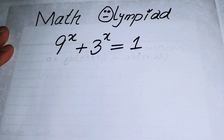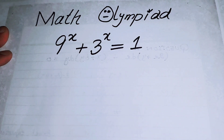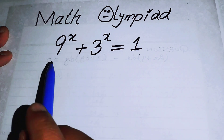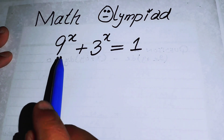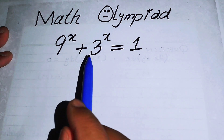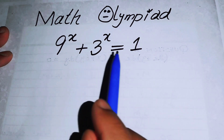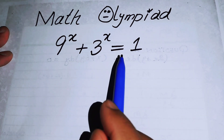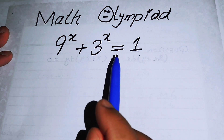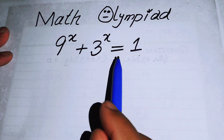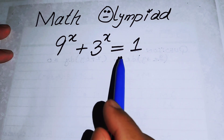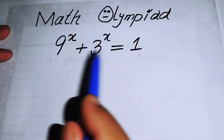Hello everyone, welcome back to the Map of Mathematics. In this video we are going to solve this nice exponential problem: 9 to the power of x plus 3 to the power of x is equal to 1, and we will solve this problem for the value of x.